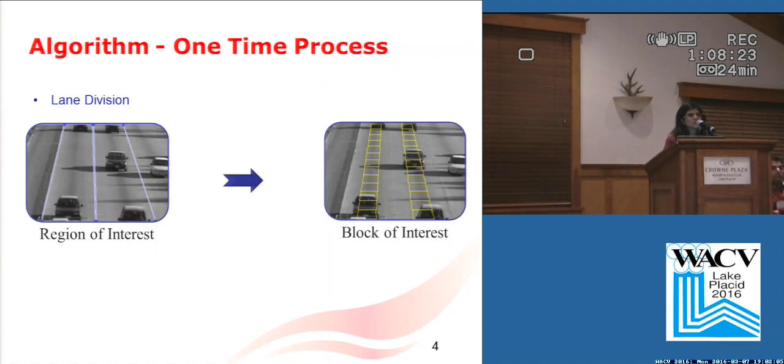The first thing that we do is we mark the region of interest. So in this case the region of interest is lanes for us. Right now it's manual but it can be automated using any lane detection algorithm.